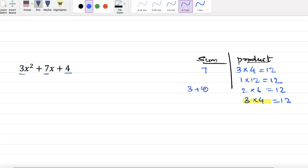Break the middle term, so we can write here 3x squared plus 3x plus 4x plus 4. So you have to find the common factors in the first 2 and the last 2.